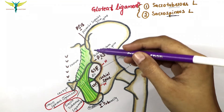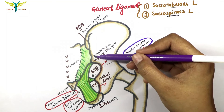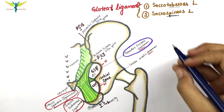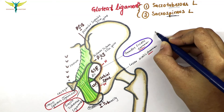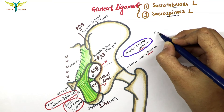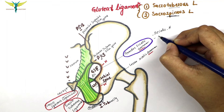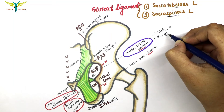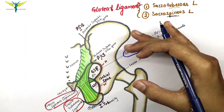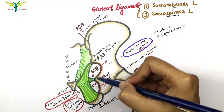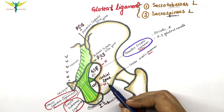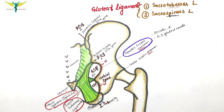The greater sciatic foramen is a pathway for structures leaving the pelvis and entering the gluteal region. The main structures passing through it include the sciatic nerve and the superior and inferior gluteal vessels, which pass from the pelvis and enter the gluteal region.